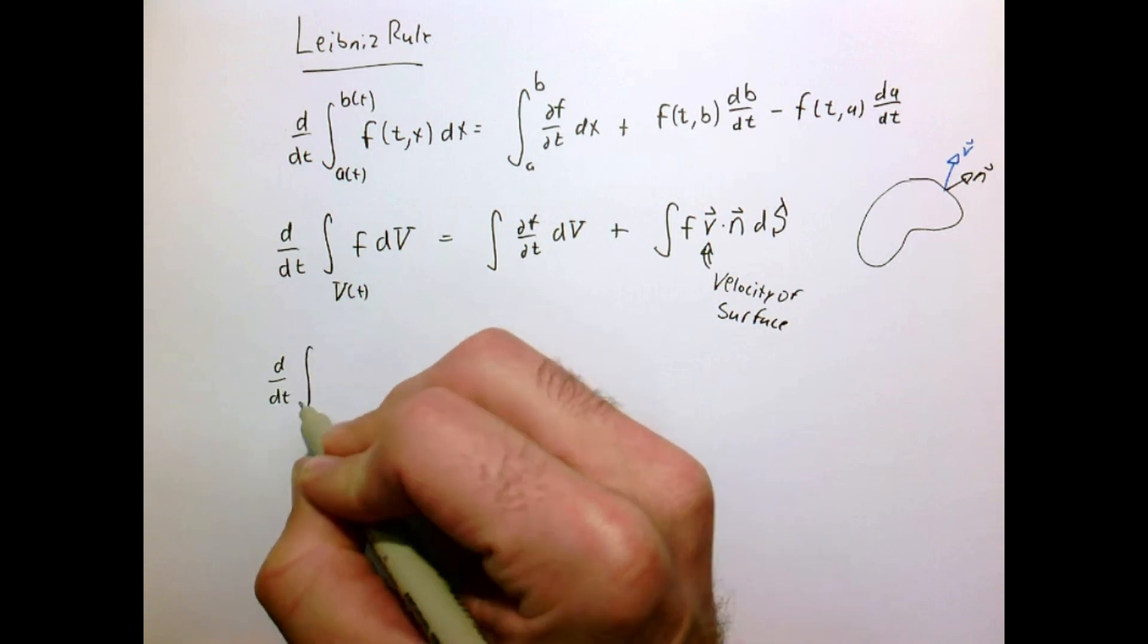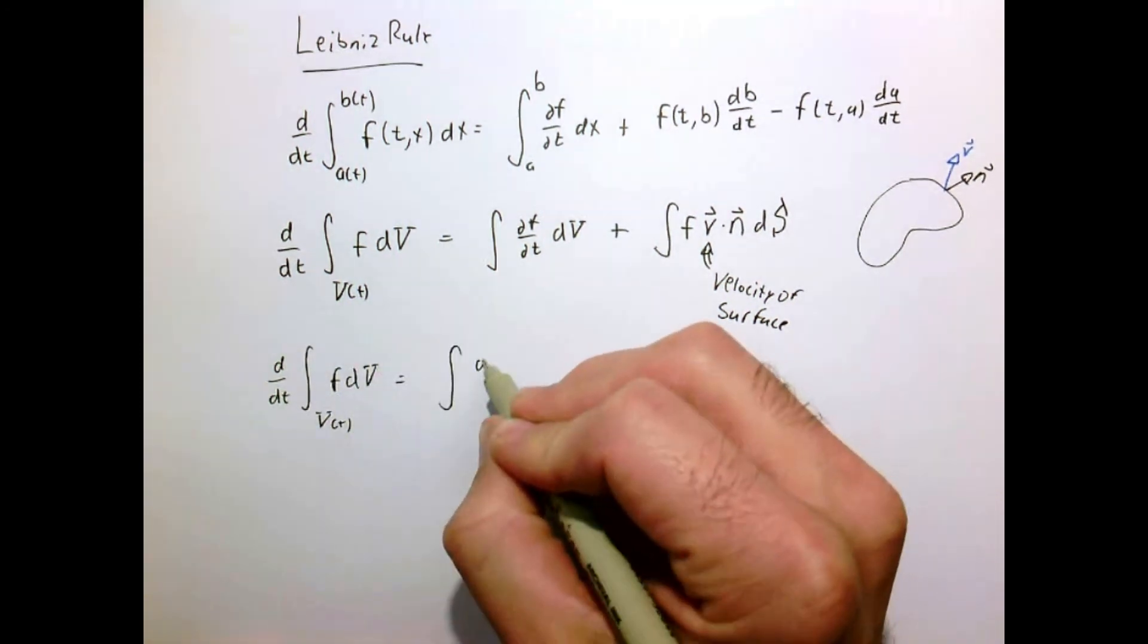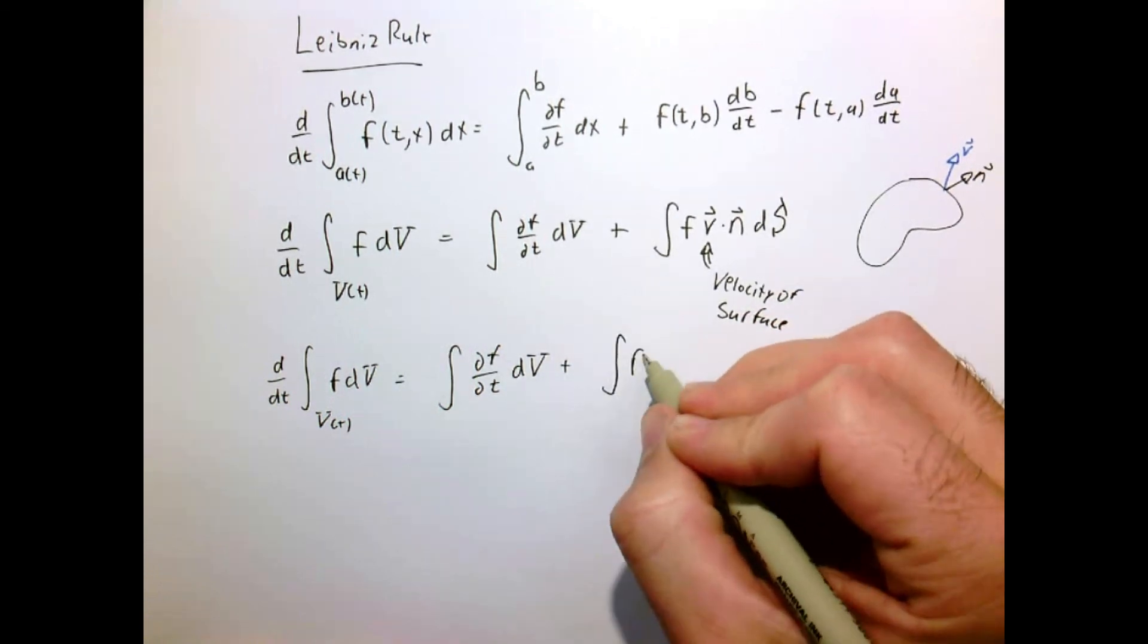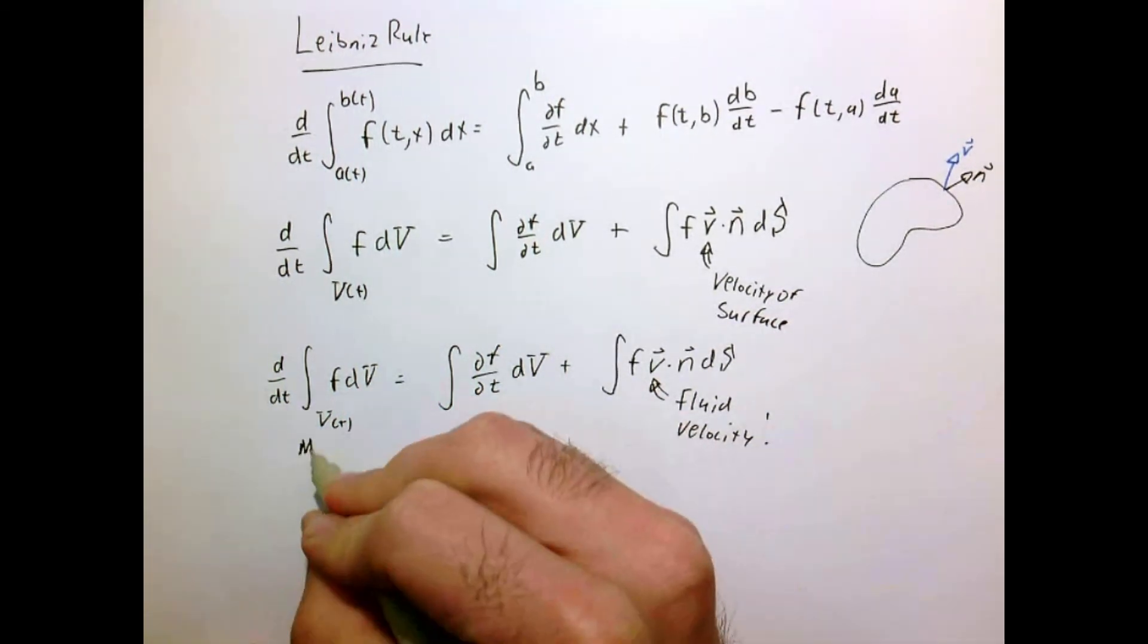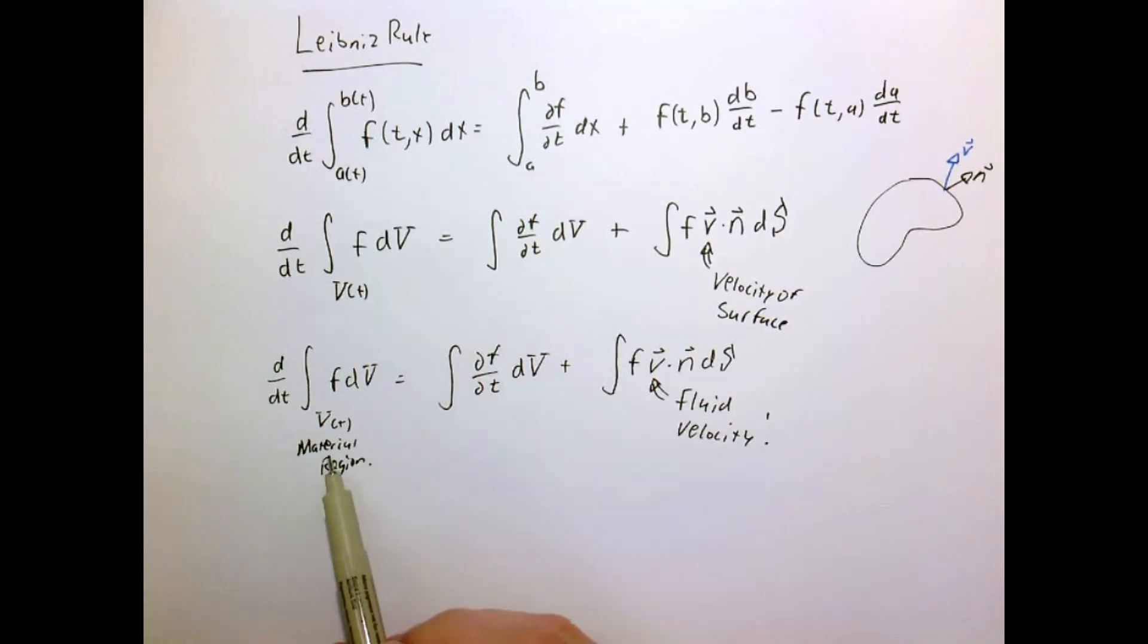Well nothing changes in Leibniz rule. Other than when our volume of integration which is changing with time, which is now a material region, that velocity becomes the velocity of the fluid.